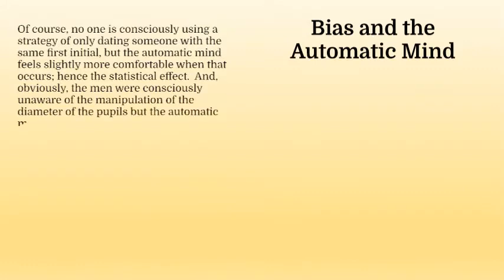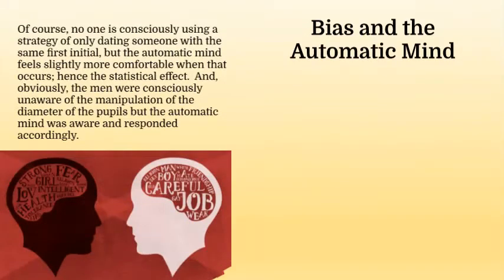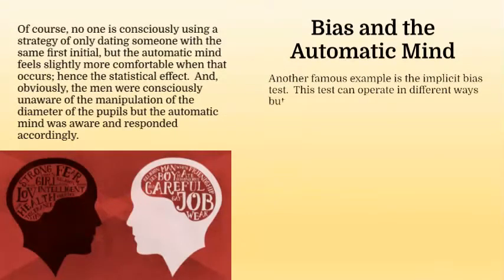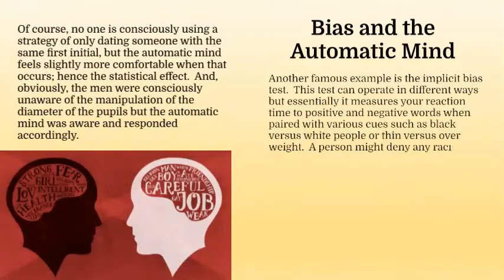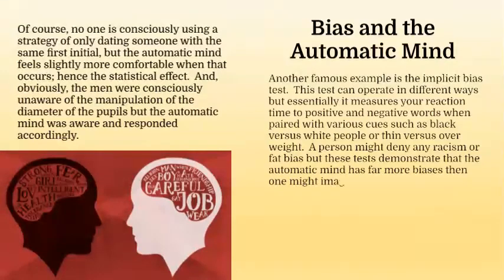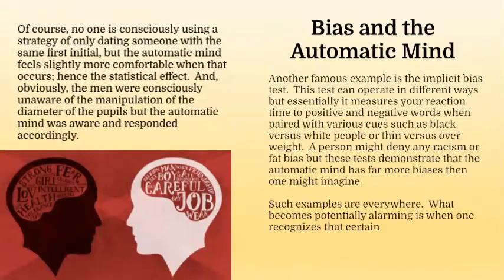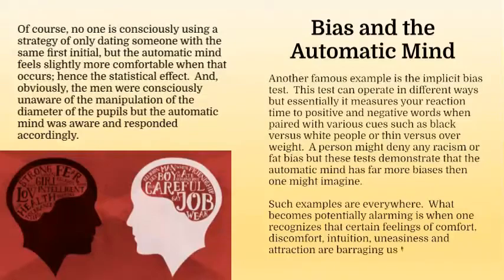Another famous example is the implicit bias test. This test essentially measures your reaction time to positive and negative words when paired with various cues, such as black versus white people or thin versus overweight. A person might deny any racism or fat bias, but these tests demonstrate that the automatic mind has far more biases than one might imagine. What becomes potentially alarming is when one recognizes that certain feelings of comfort, discomfort, intuition, uneasiness, and attraction are barraging us throughout the day entirely outside of conscious control.